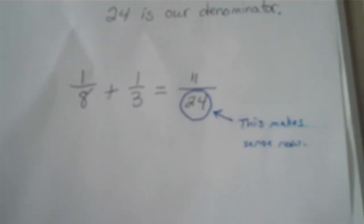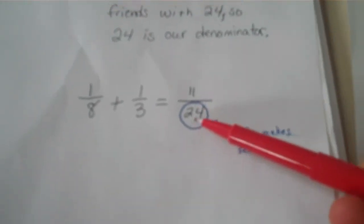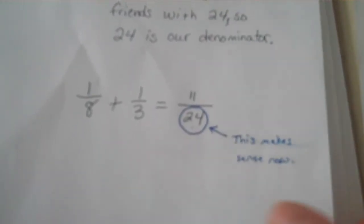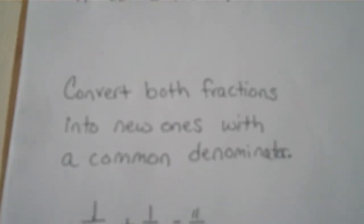One eighth plus one third equals eleven twenty-fourths. So this makes sense now. It's a friend of eight and of three. But where did the eleven come from? Well, you need to convert both fractions into new ones with a common denominator before you can add them. Watch.